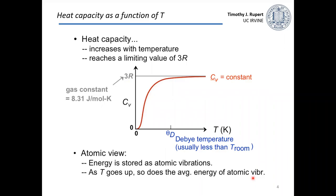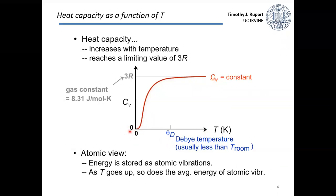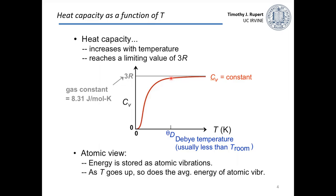Heat capacity changes as a function of temperature — it generally increases until it reaches a limiting value. This plot shows heat capacity measured at constant volume versus temperature. At very low temperatures it's relatively low, then it increases, and at some point it reaches a limit — it can't exceed three times the gas constant. The temperature where it hits this asymptotic value is called the Debye temperature, which depends on your material. Below the Debye temperature, heat capacity is a function of temperature; above it, it's essentially constant.